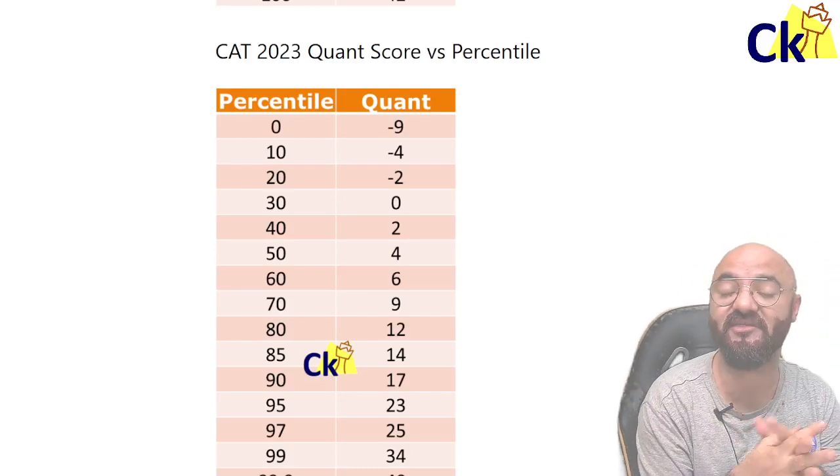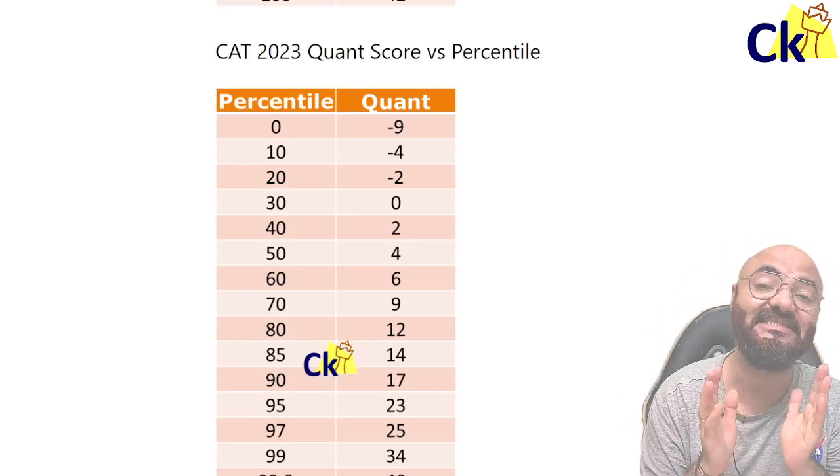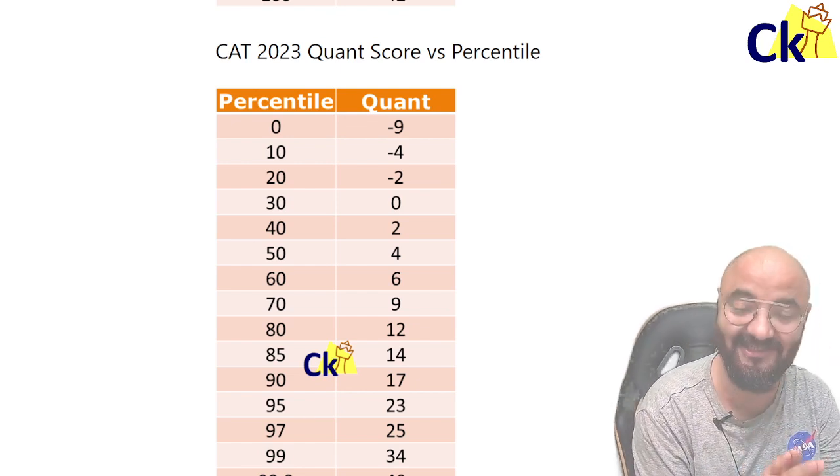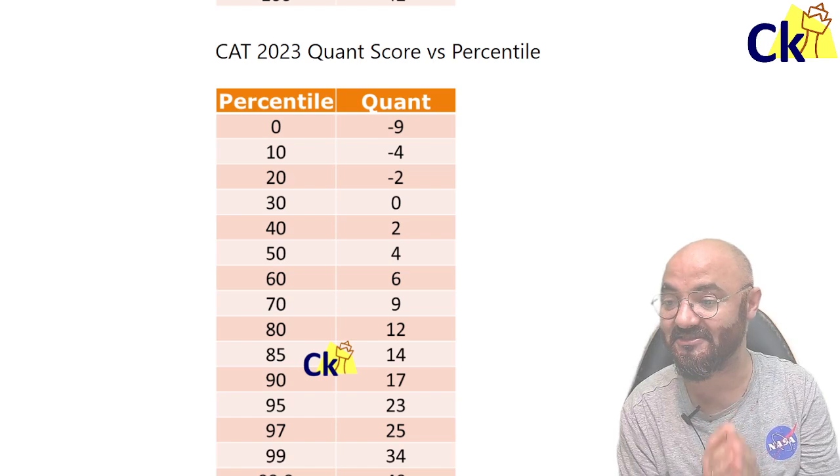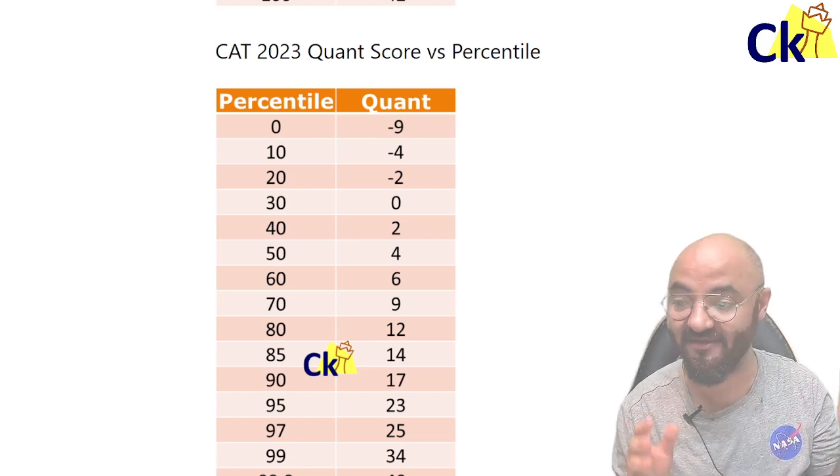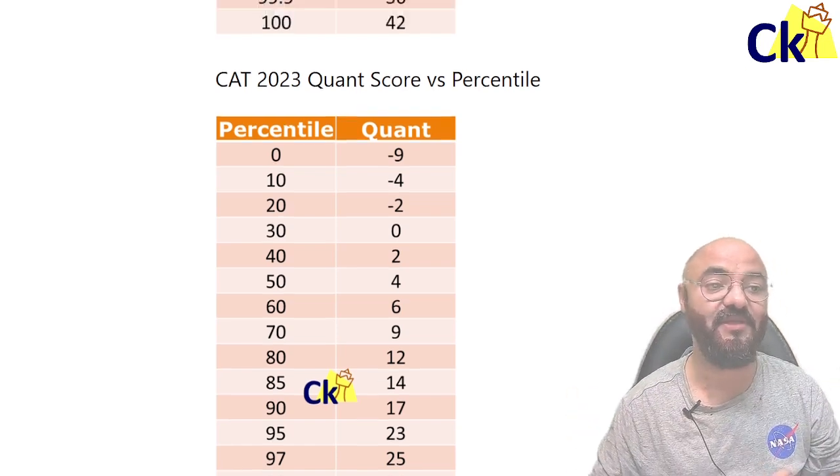Hello guys, if you look at the CAT score versus percentile of last year, 66,000 students got zero marks in the quant section. 66,000 is a huge number, and I want to discuss this today.